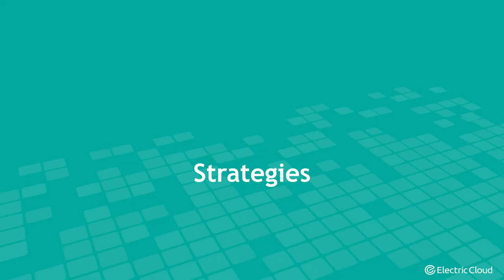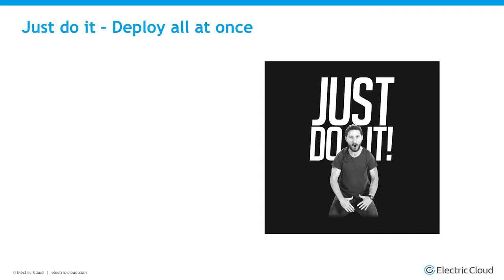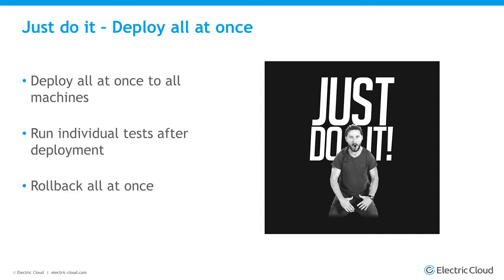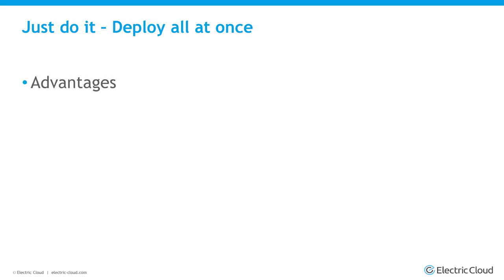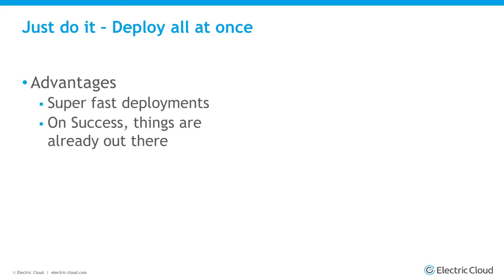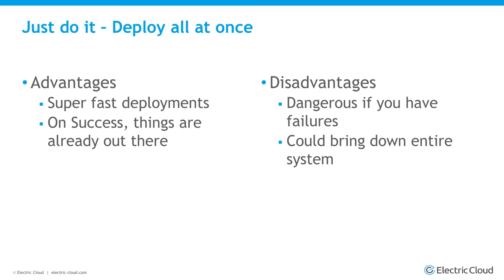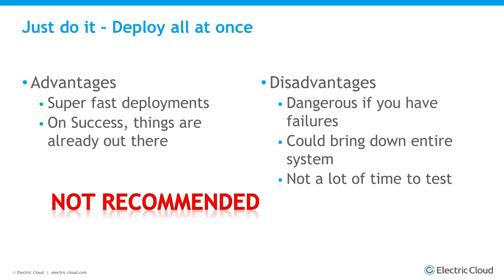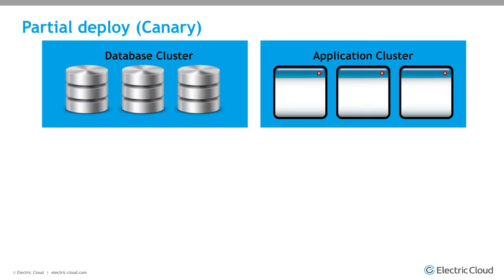Now, some strategies you can use. The first is the 'just do it' strategy — deploy everything at once to all machines. It provides super fast deployments, and on success things are already out there. The disadvantages are you break everything and you don't have a lot of time to test. I would not recommend this strategy, but it is an option.